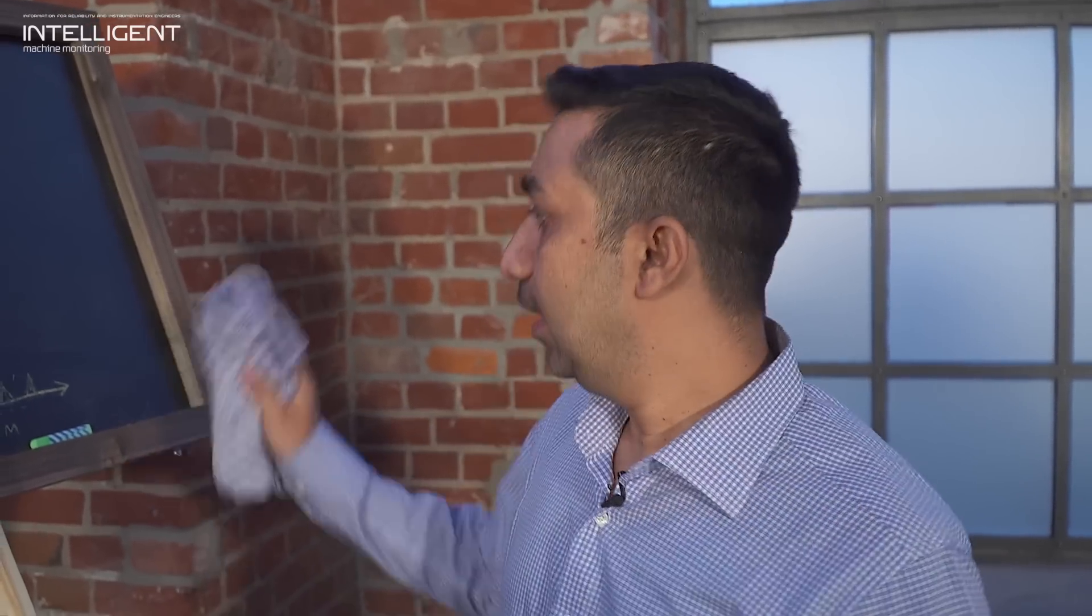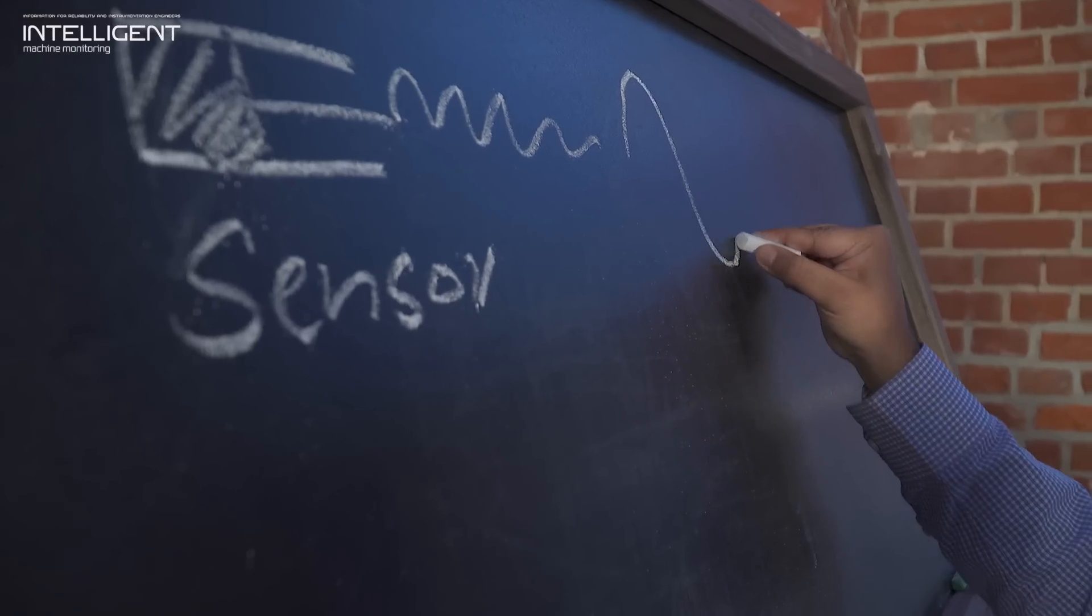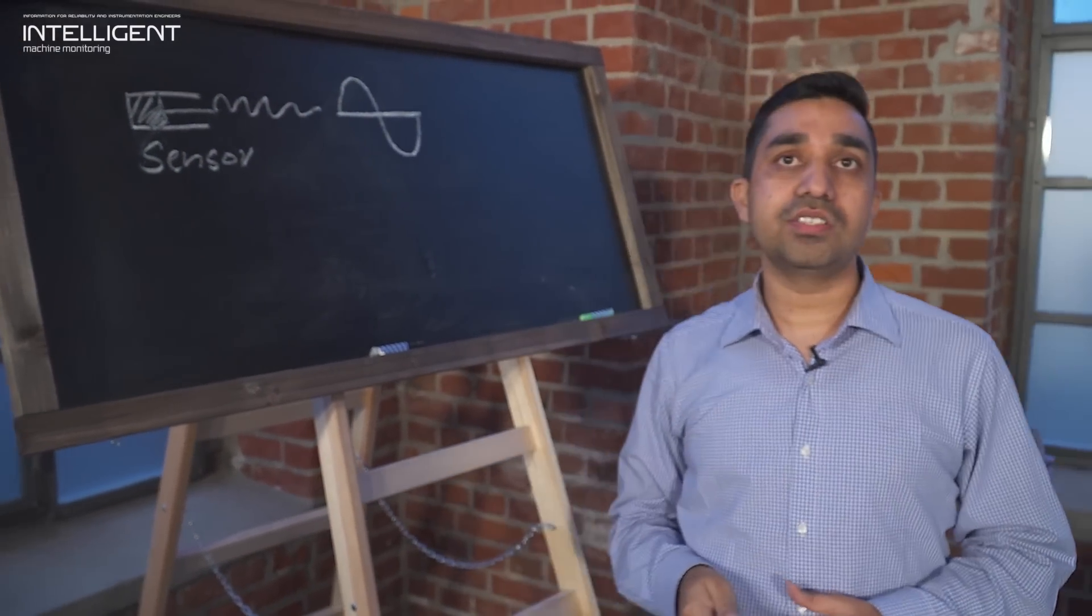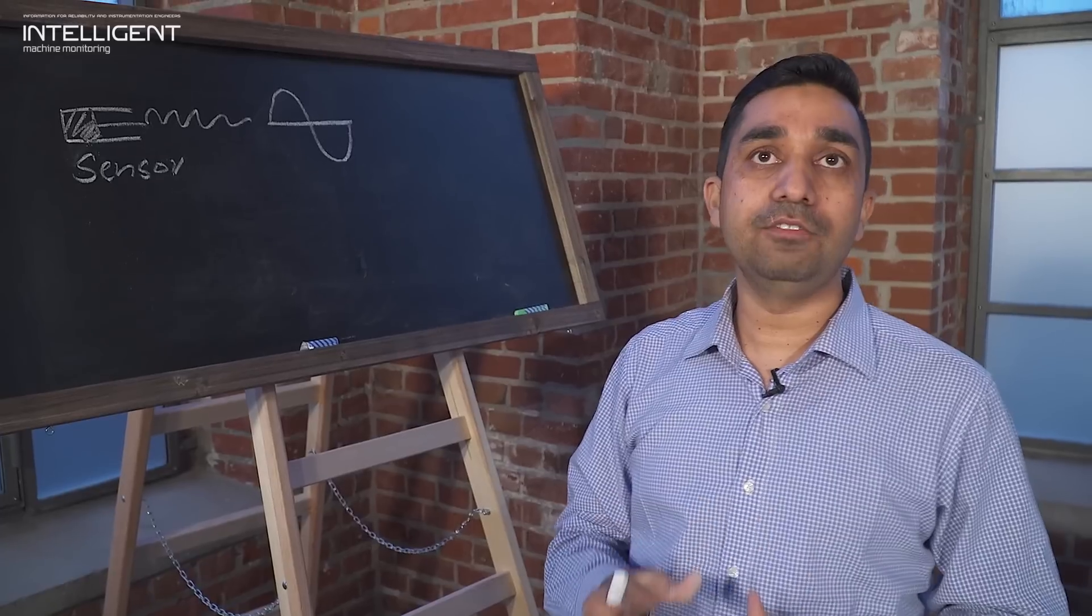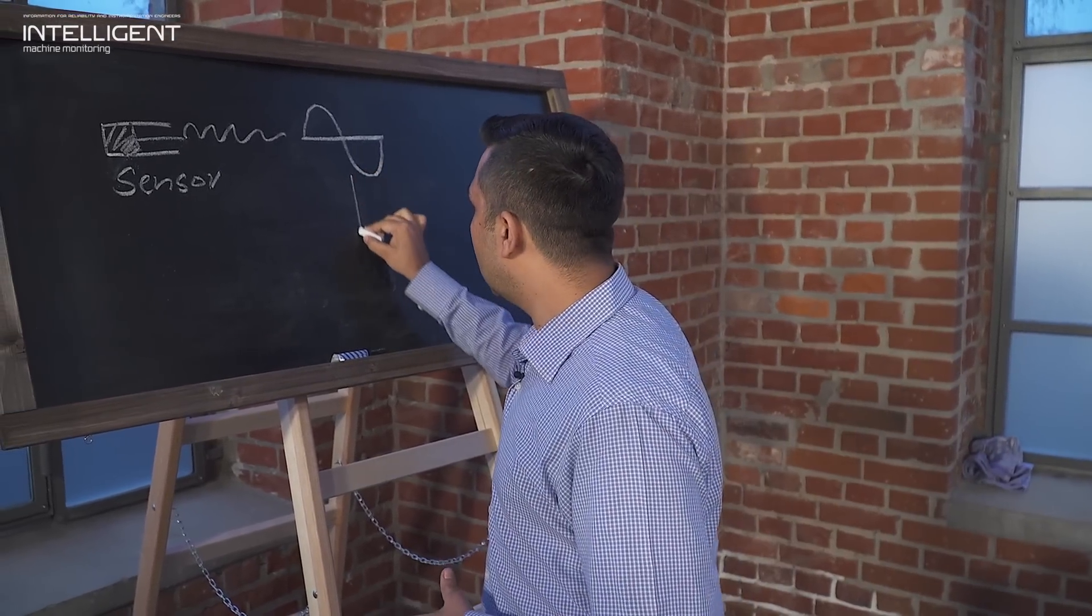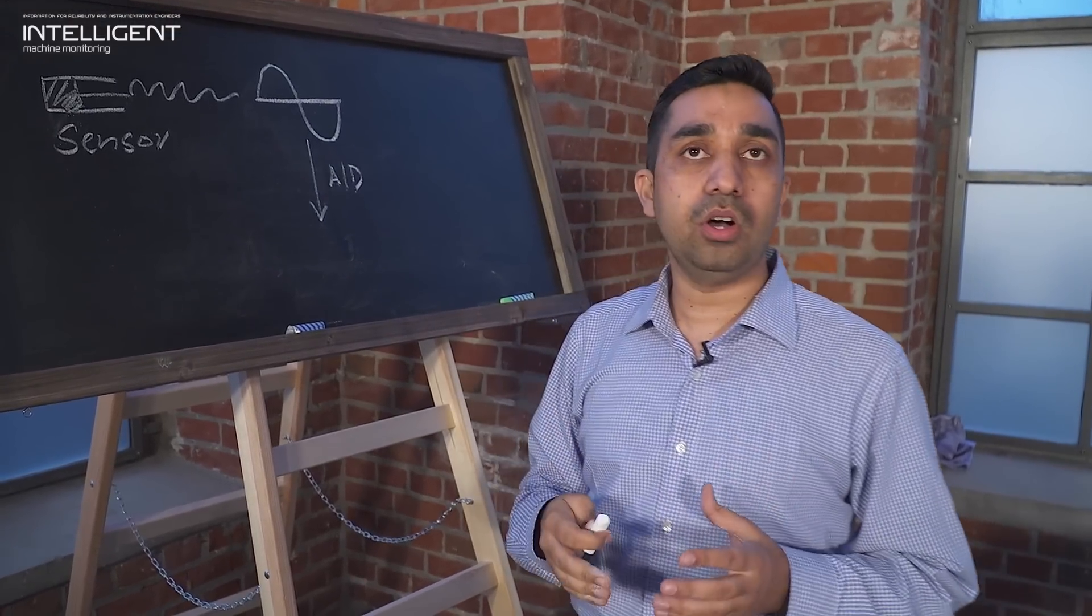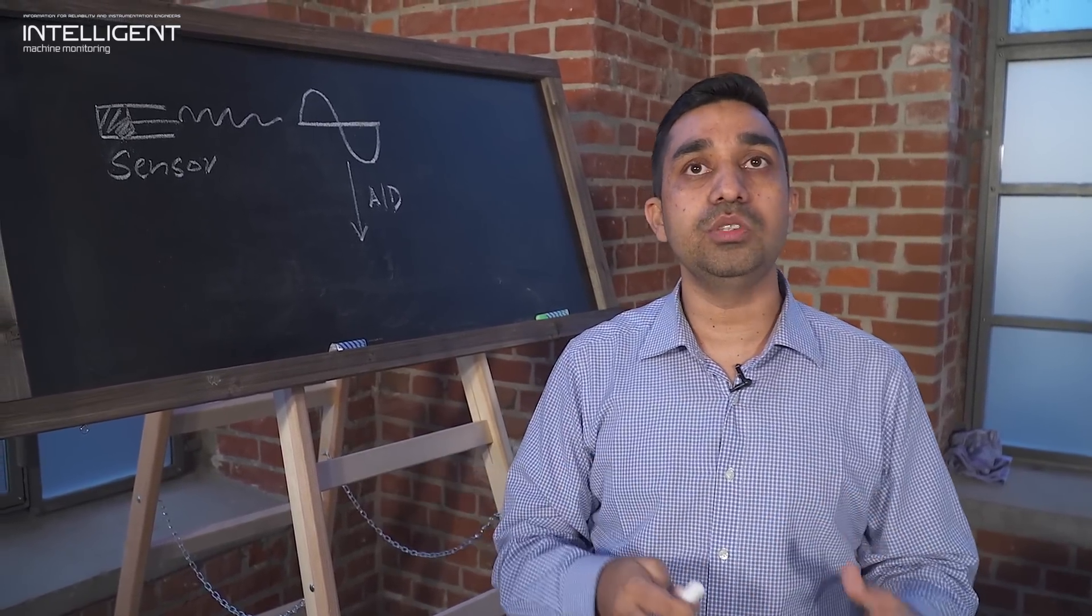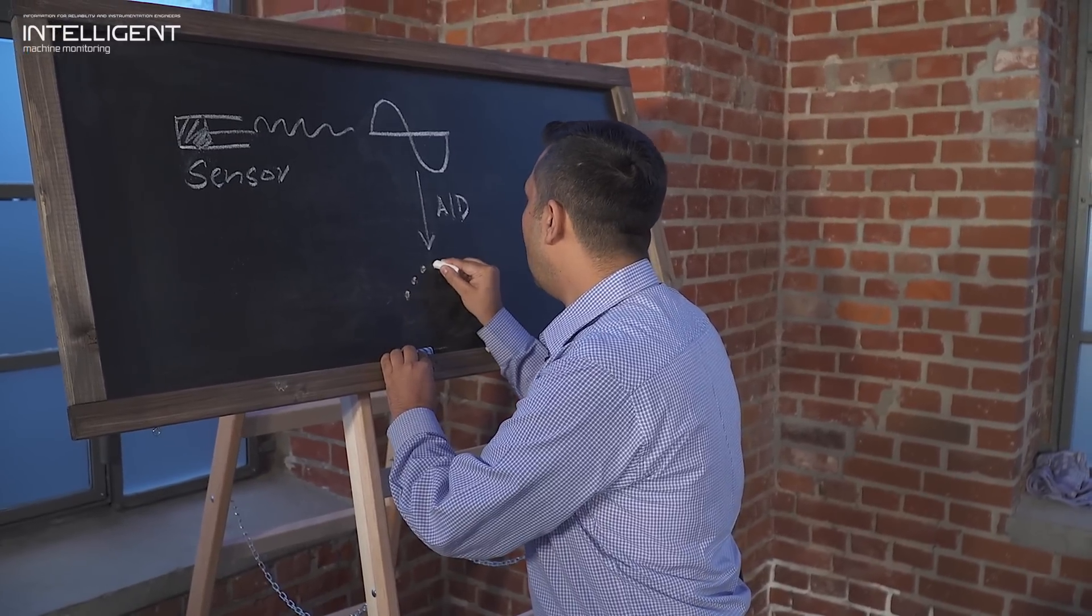As a fact, we know that any vibration sensor gives you an analog signal. Let's have a look at the flow chart or flow diagram, how we derive a time signal. This analog signal has all the information what we needed. But nowadays, this analog signal is converted into digital form via A2D converters. Why the digital form? Because digital form is easy to manipulate and also easy to store.